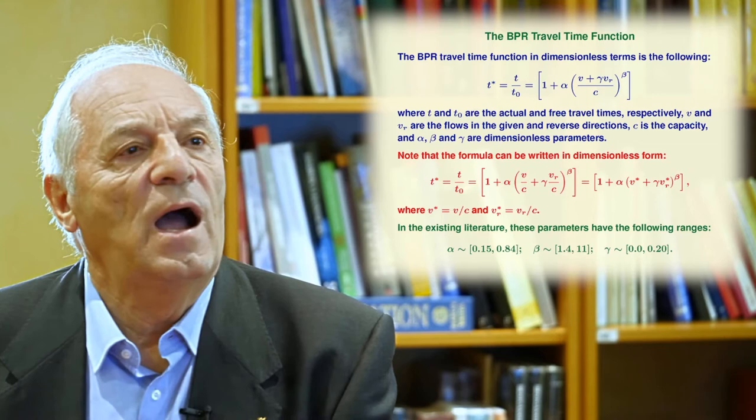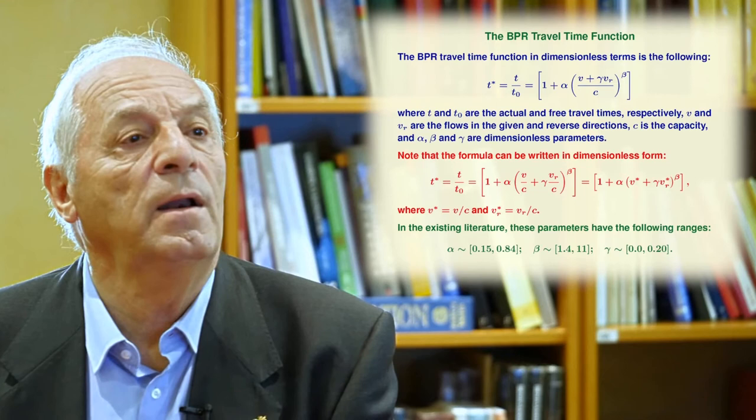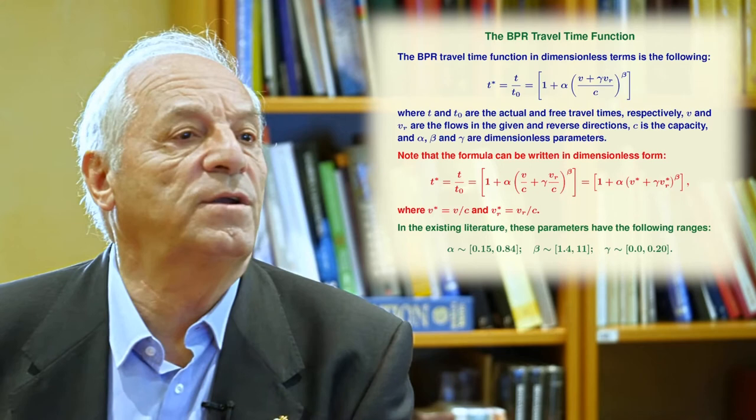Alpha, beta, and gamma are parameters of the model. C is the capacity of the highway, of this segment of highway. And B and BR are the number of cars that are circulated in the same and in contrary direction respectively.